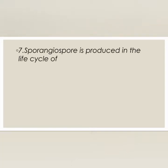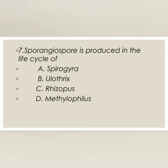Next question: sporangiospore is produced in the life cycle of — Spirogyra, Pelothrix, Rhizopus, or Mythophilus? The correct answer is option C: Rhizopus.